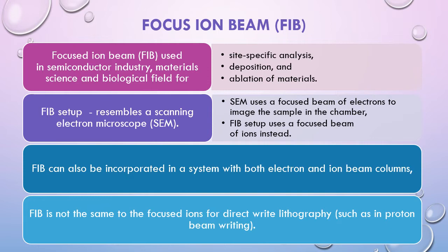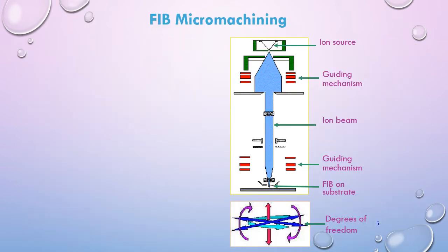FIB should not be confused with electron beam lithography. FIB is more about material removal using ions, for example such as in proton beam writing. These are generally quite different systems where the material is modified by other mechanisms. The FIB system uses a finely focused beam of ions, usually gallium, which are bombarded through a guiding system and focused onto the substrate.